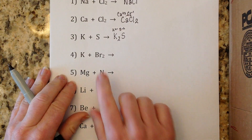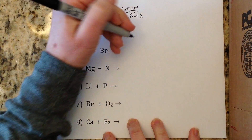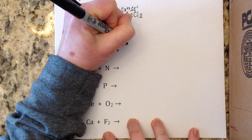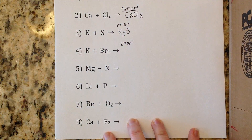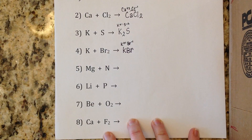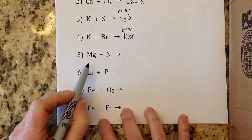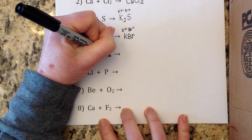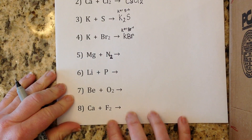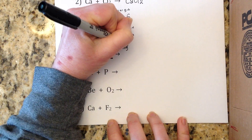Number four: potassium metal and bromine gas. Potassium is K⁺¹ and bromide is Br⁻¹. The ones cancel and you get KBr. Number five: magnesium metal and nitrogen gas — that N₂ should have a subscript 2 since nitrogen is diatomic. Going back to the original ions, magnesium has a plus two charge.